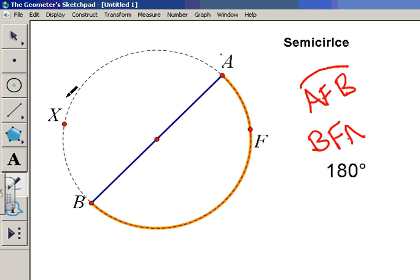Now, as it happens, arc AXB is also a semicircle, but it's a different semicircle than the one we're talking about.